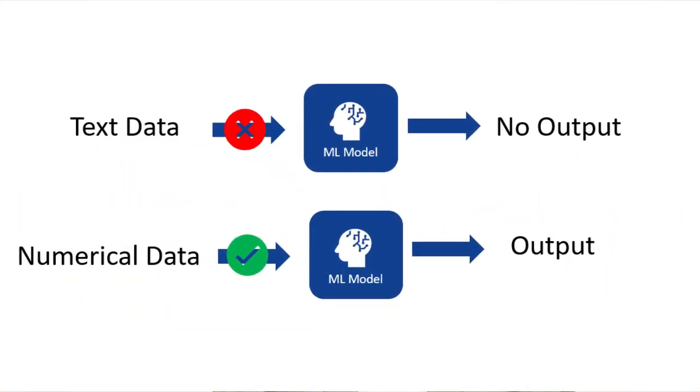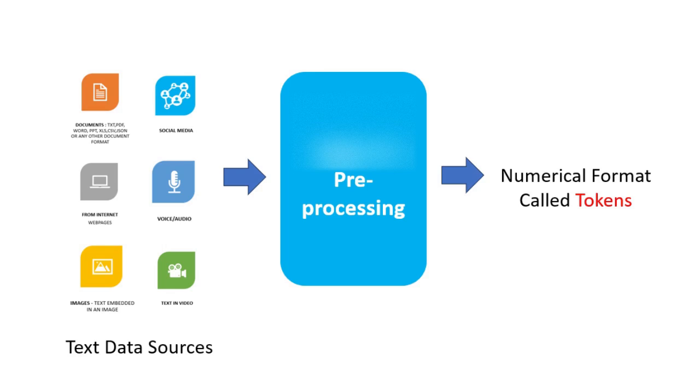It might surprise you to know that machine learning models or language models do not consume textual data. Instead, they exclusively work on numerical data, leveraging the statistical relationships between the data points to learn the relationships and patterns within your data. Therefore, all this textual data must be transformed into numerical form through a text data preprocessing pipeline. We will talk about this text data preprocessing pipeline in detail.